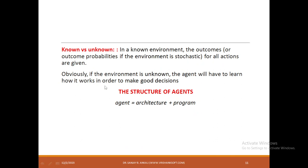Known and unknown: a known environment is one where the outcomes and possibilities of the environment are already known — you know the environment, the current state, and what action to implement. Otherwise it is unknown. When you are creating an agent, the agent comes with architecture and its program.